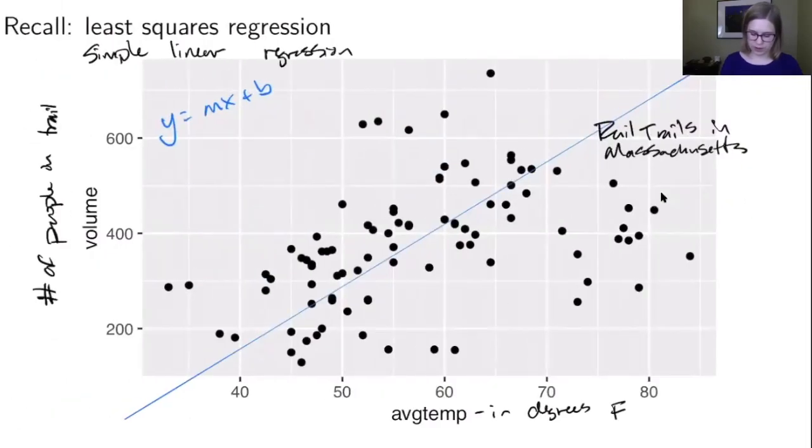If we were looking at this picture and wanted to make a prediction of how many people were on the rail trail when the temperature was 40 degrees, we could just go up to the line and find the predicted value. We could also plug in 40 degrees into our equation to find that prediction.